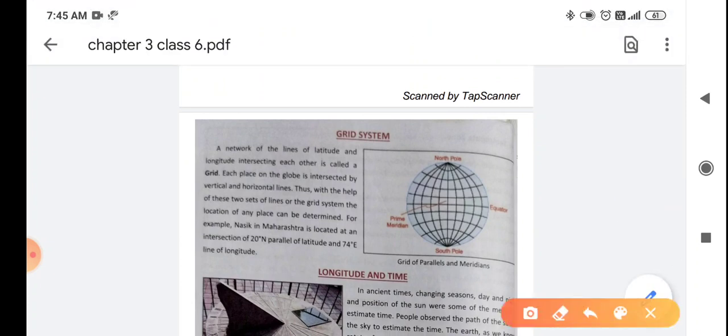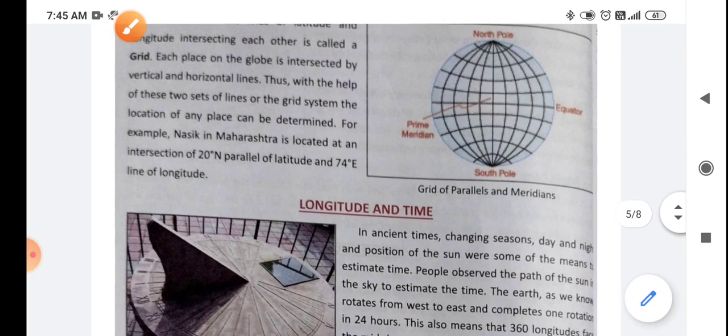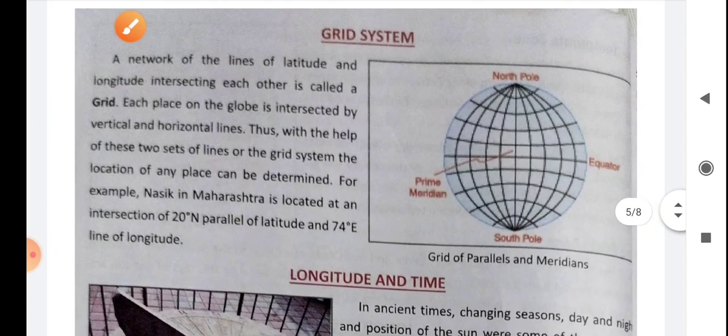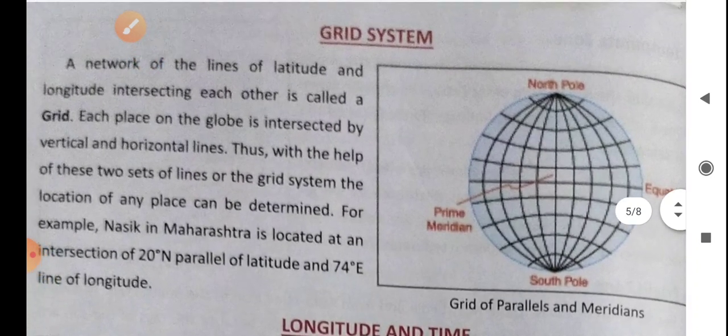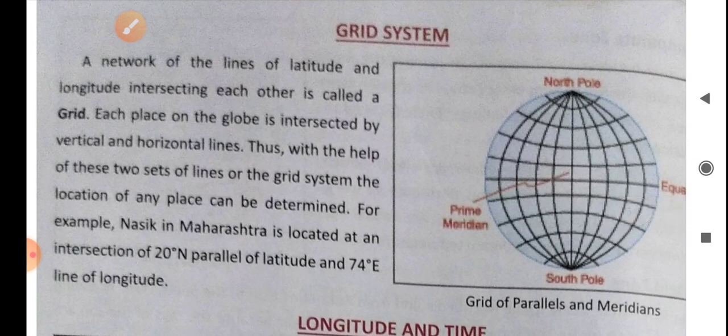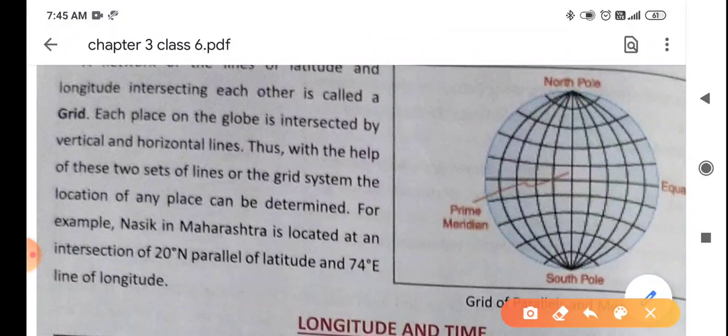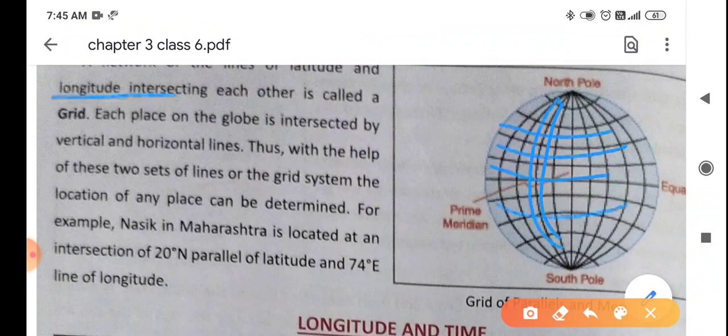Now what is grid system? A network of lines of latitude and longitude intersecting each other is called grid. Lines intersecting each other means cutting each other. That is grid.